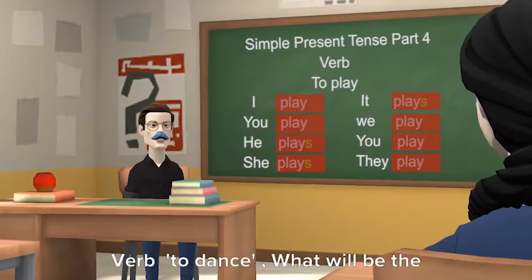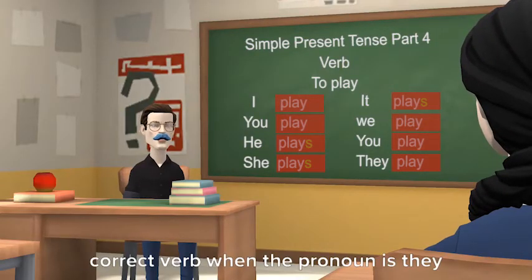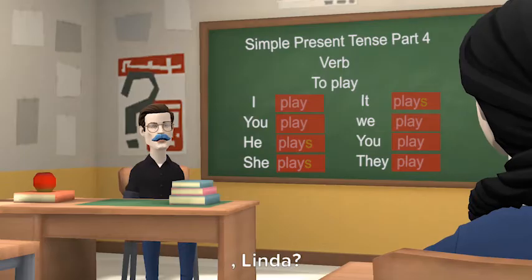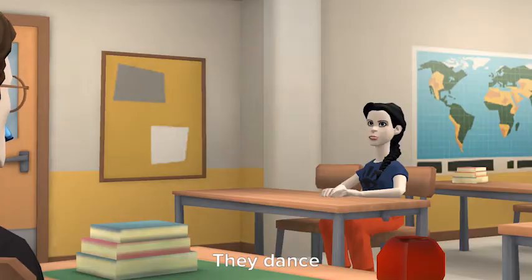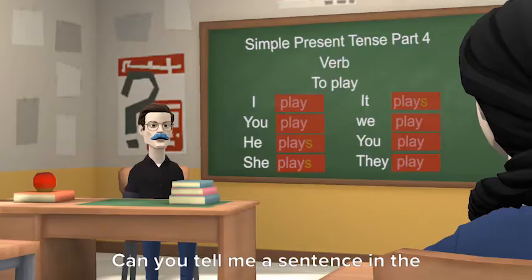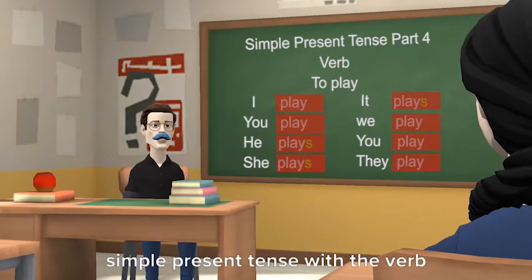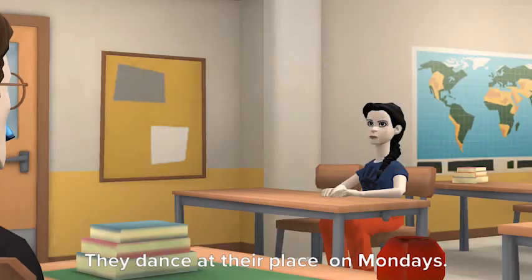Verb 'to dance': What will be the correct verb when the pronoun is they? Linda: They dance. Can you tell me a sentence in simple present tense with the verb 'to dance'? They dance at their place on Mondays. Good.